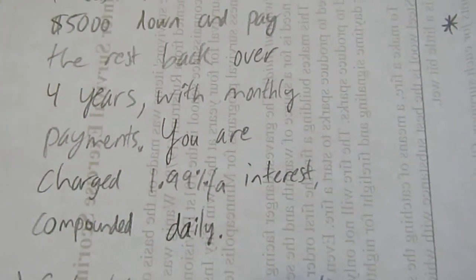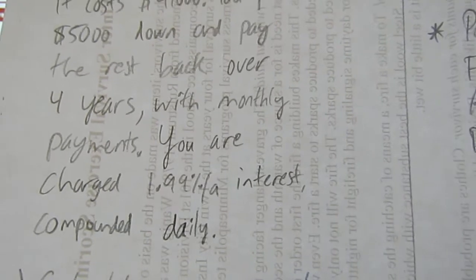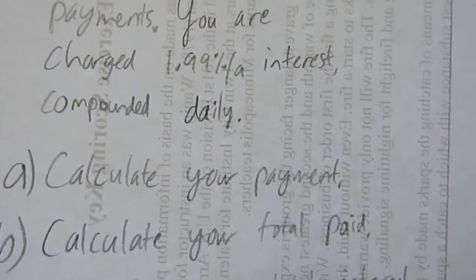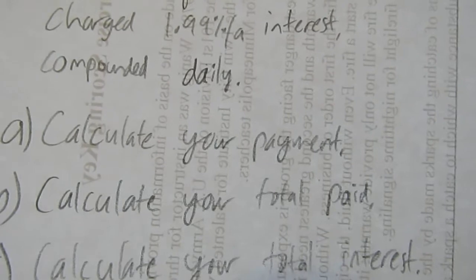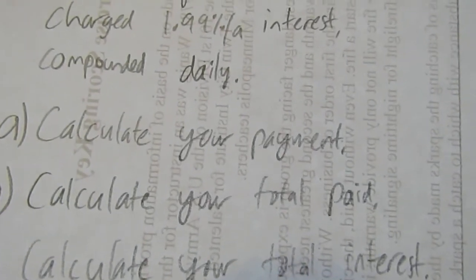You are charged 1.99% per year interest compounded daily. We're going to calculate the payment, calculate the total paid, and calculate your total interest.